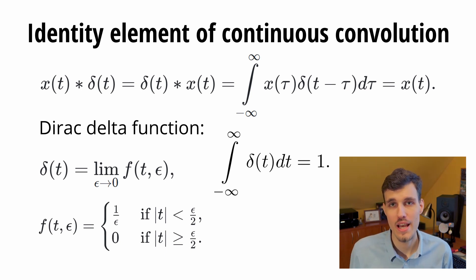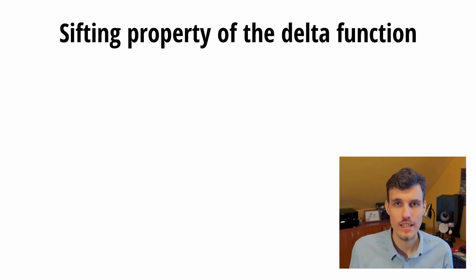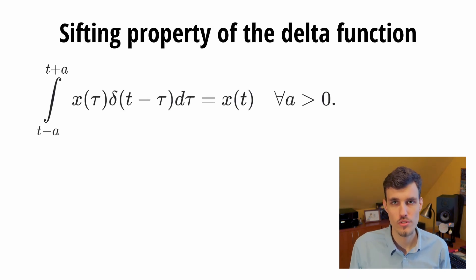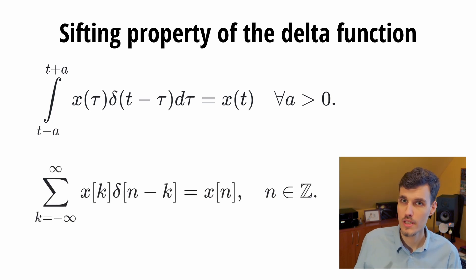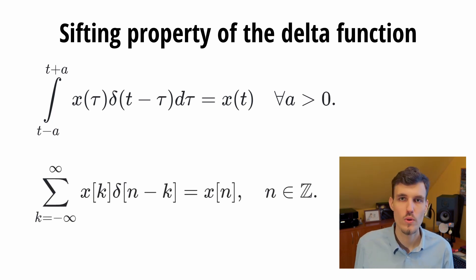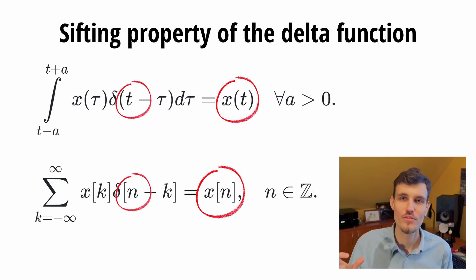Therefore, it can also be used as a probability density function. These identity elements have a very important property which is called the sifting property. It means that convolution in the continuous case and sum in the discrete case with this delta function, be it continuous or discrete, will exactly sift only one element that is equivalent to the argument shift of the delta function.